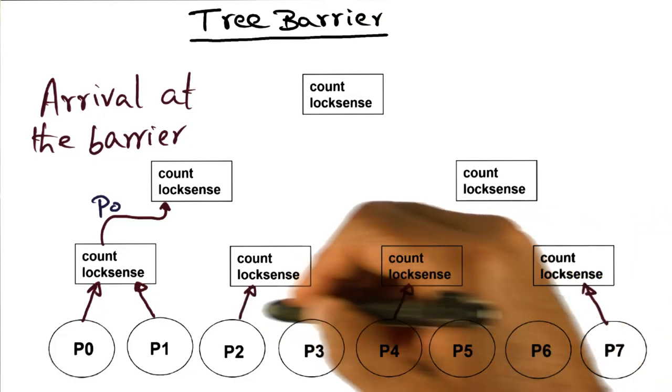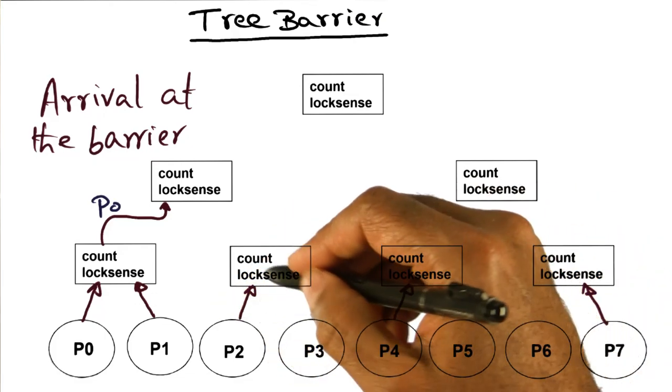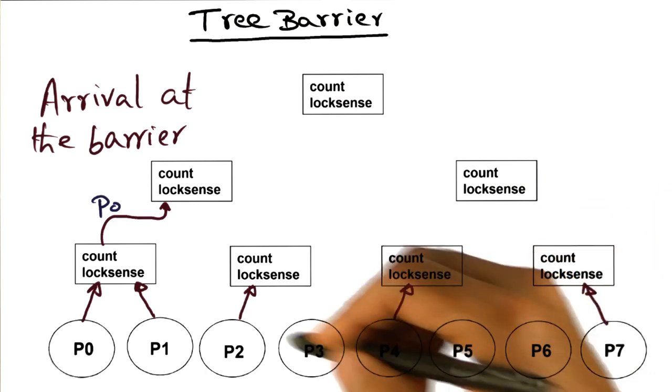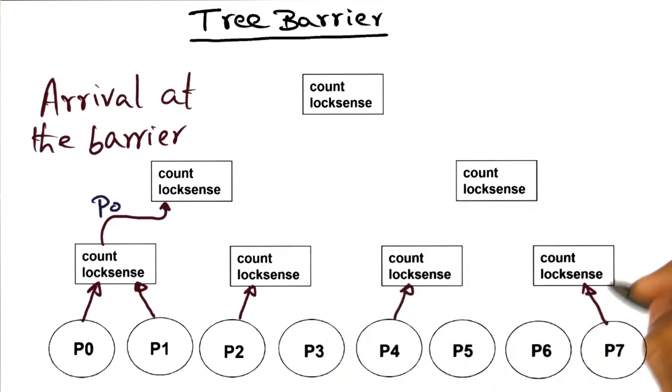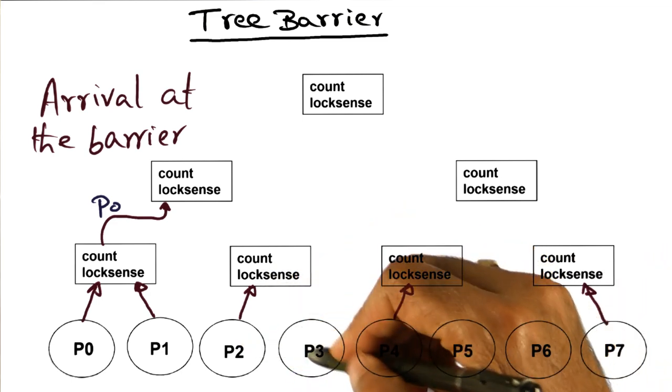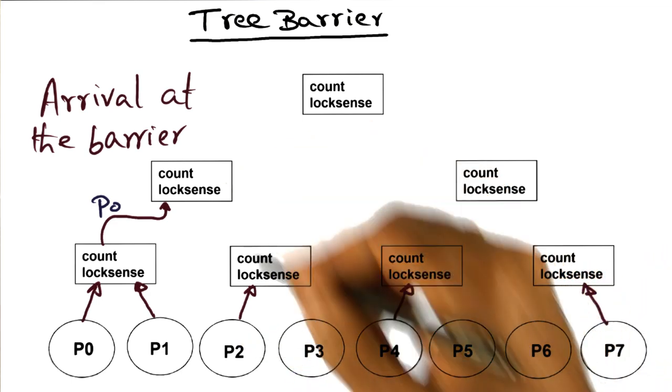Of course, multiple processors can arrive at the barrier at the same time, and all of them are going to work with their local data structure. So like this guy will work with this local data structure, this guy with this local data structure, with this local data structure, and each of them is waiting for his partner to arrive so that they can move up the tree.